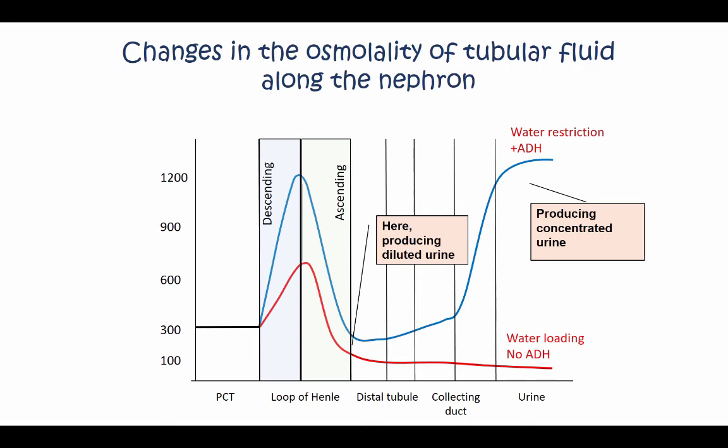What this also tells you is that, in a manner of speaking, the default mechanism of the kidney is to make a diluted urine. It is only when ADH is present that a concentrated urine is produced, which happens especially in the medullary collecting ducts.